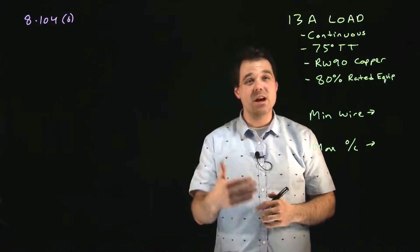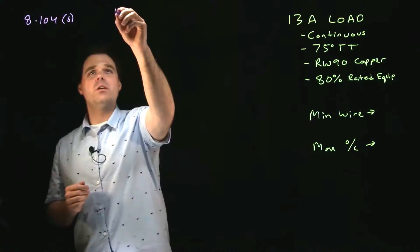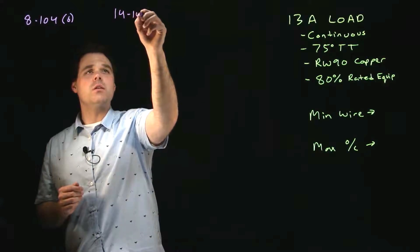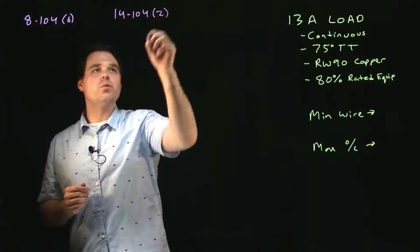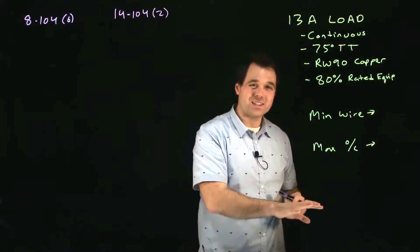Now there's also another rule we are going to visit today. The other rule we are going to visit is 14-104 sub rule 2 and that tells us what size overcurrents we are allowed to put on what size wires.